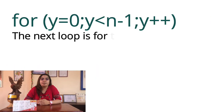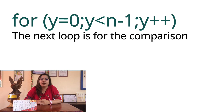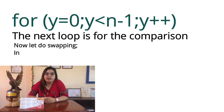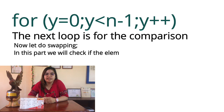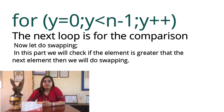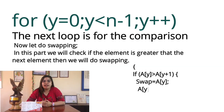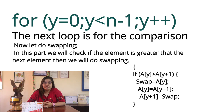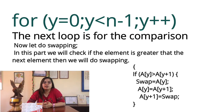The inner loop is for the comparison: for y = 0; y < n - 1; y++. Now let's do the swap. In this part, we will check if the element is greater than the next element, then we will do the swap. If A[y] > A[y+1], then: swap = A[y]; A[y] = A[y+1]; A[y] = swap.